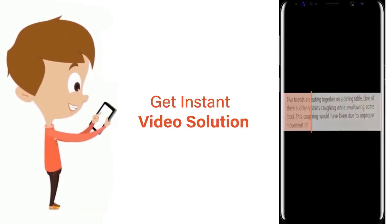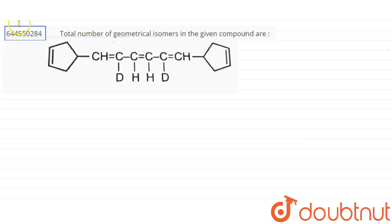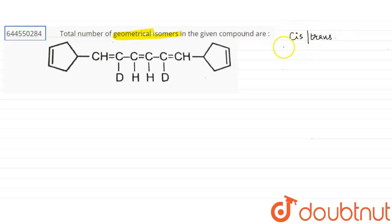Hello students. In this question, they have asked about the total number of geometrical isomers in the given compound. You should know what geometrical isomers are — they are cis and trans forms.